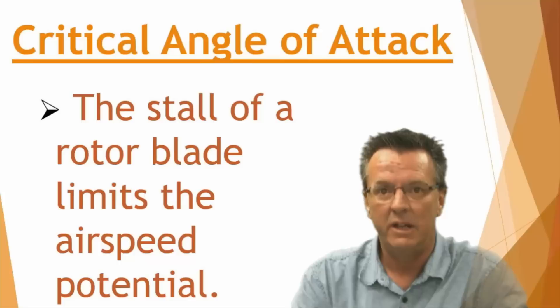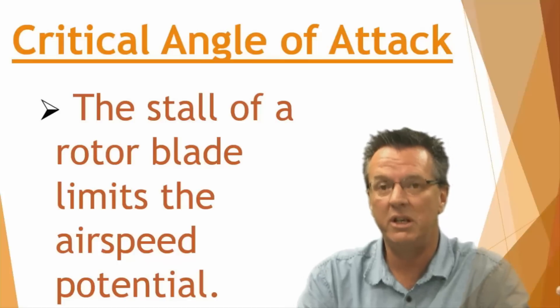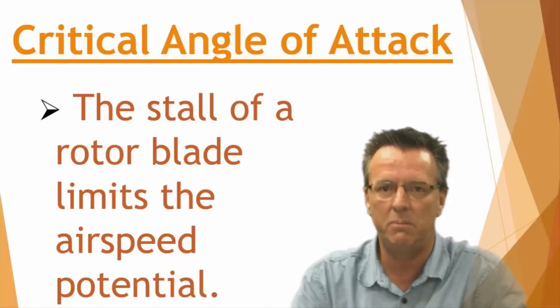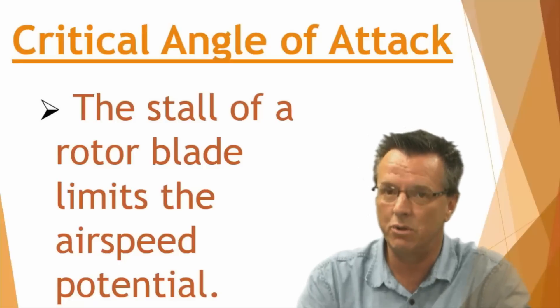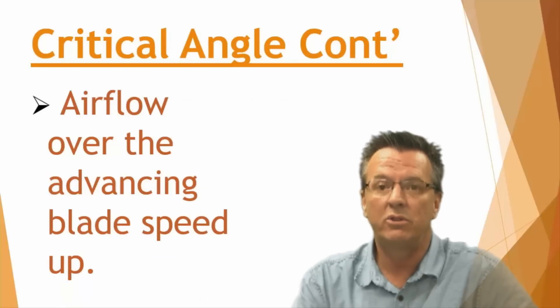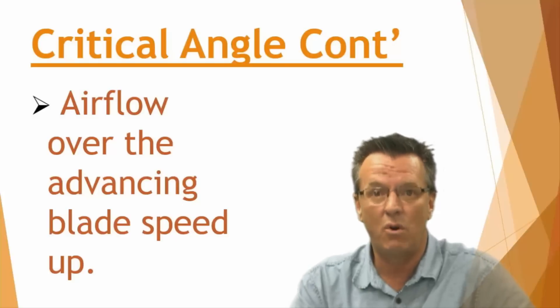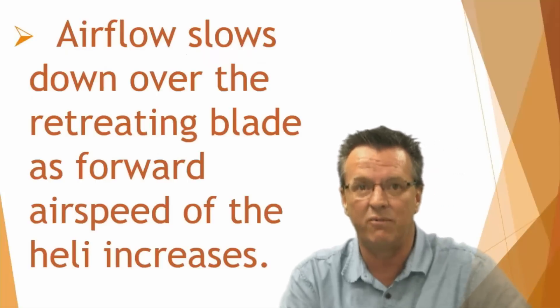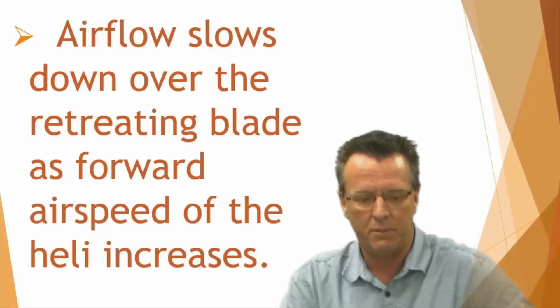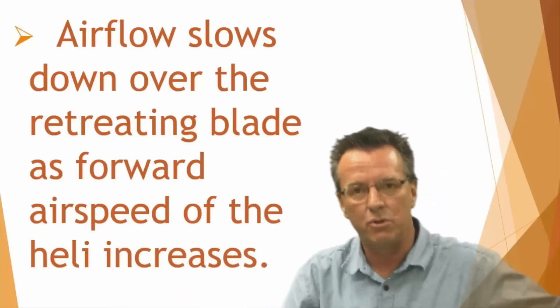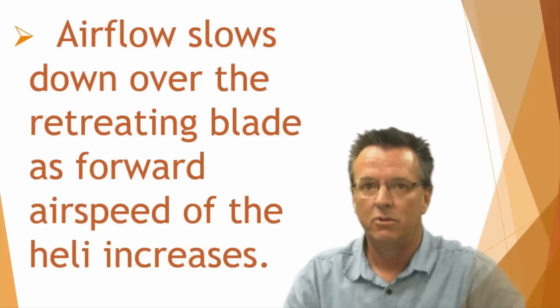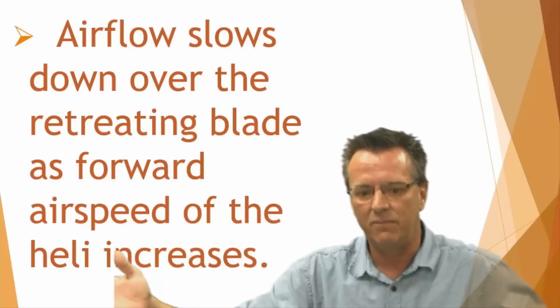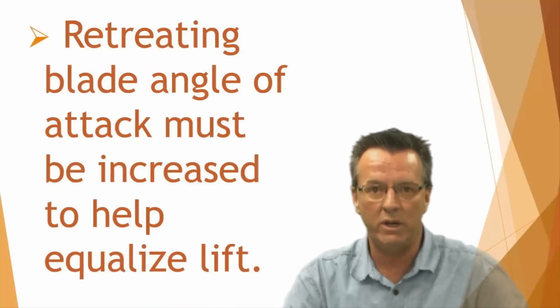One reason is structural, and the other reason is what we call VNE, or never exceed speed. If you exceed the VNE, you can get into a retreating blade stall. What's going on in the rotor system is that as the helicopter starts traveling faster, the airflow over the advancing blade speeds up, and the airflow slows down over the retreating blade. The advancing blade is moving into the wind, the retreating blade is moving away from it — so you get more lift on one side and less on the other. The retreating blade angle of attack must be increased to help equalize the lift.